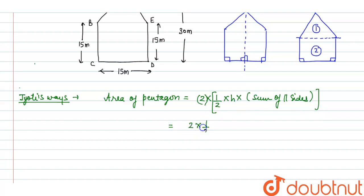Now when we put the values, it is 2 × (1/2) × the height which is 15 × sum of parallel sides, meaning this side is 30 and this side is 15, so 15 + 30. So we can write, on solving, we get 337.5 meter square is the area according to Jyoti's method.